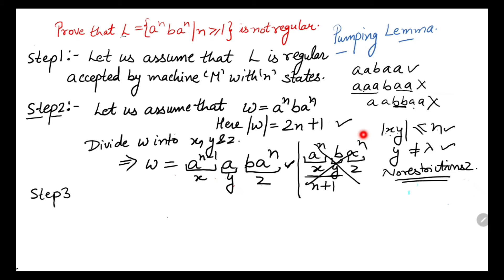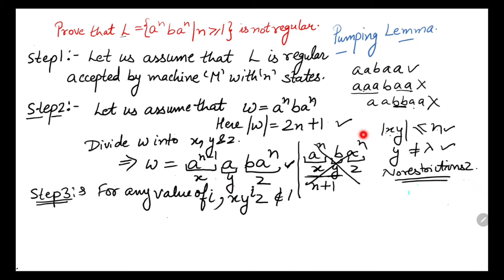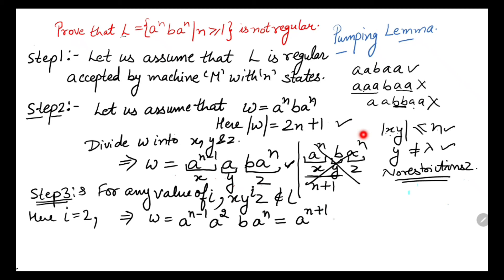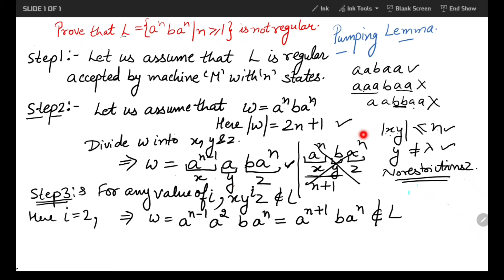In step three, we iterate: for any value of i, x y raised to the power i z should not belong to L. We consider i equals 2. Then w becomes a raised to the power n minus 1, a raised to the power 2, b, a raised to the power n, which equals a raised to the power n plus 1, b, a raised to the power n.